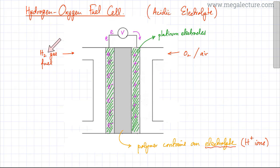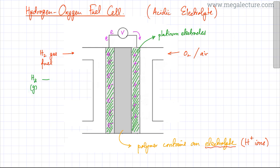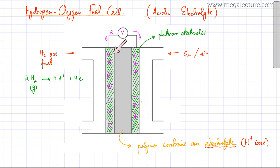When hydrogen gas is pumped into the left-hand chamber and meets the platinum electrode, a reaction occurs where hydrogen ends up losing electrons. The hydrogen gas molecules start losing electrons and produce H⁺ ions — losing 4 electrons overall. So this platinum electrode gains electrons and becomes negatively charged, because hydrogen gas coming in from the left-hand chamber increases the concentration of electrons on the platinum electrode.